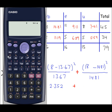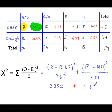2.352, plus, fractions, open brackets, 18, minus 14.81, close brackets, squared, over 14.81, equals 0.687, plus, and so on. I'm not going to work all of these out here.